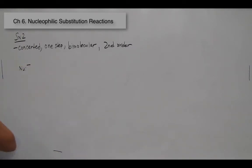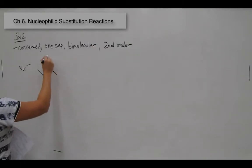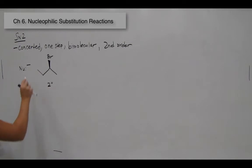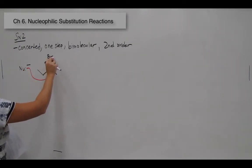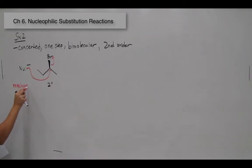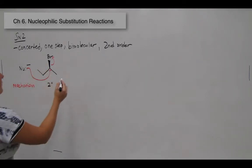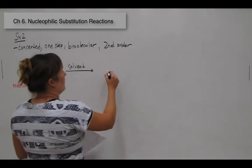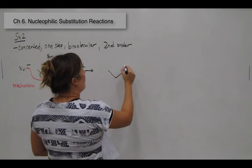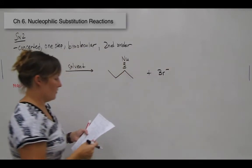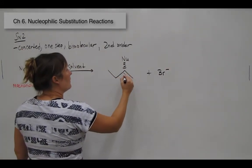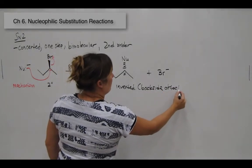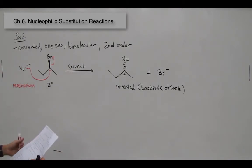In an SN2 reaction, the nucleophile attacks a secondary alkyl bromide, displacing the leaving group in one concerted step. The nucleophile attacks from the opposite side of the bromine — backside attack. Since the bromine was in front, the nucleophile comes from the back, and bromide is released. The stereocenter is inverted: if it was R, it becomes S.